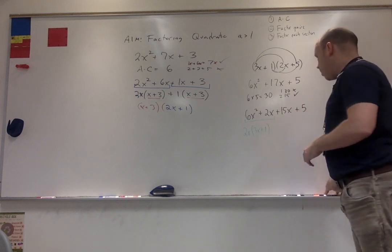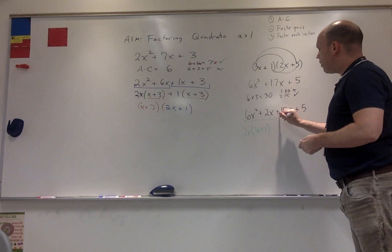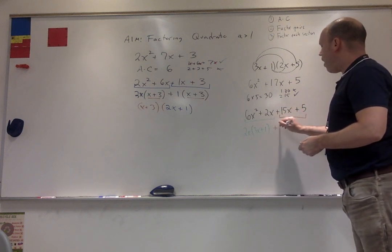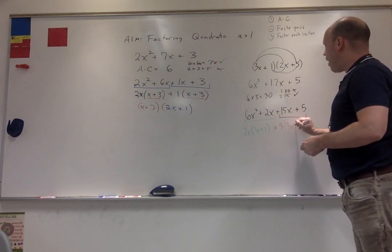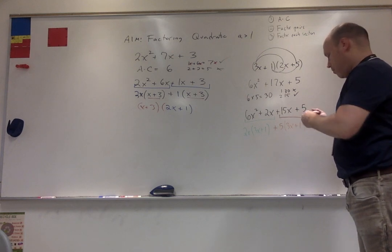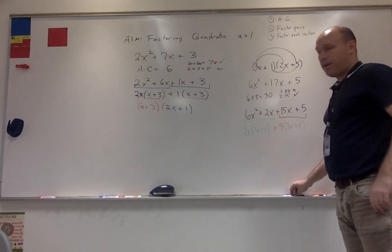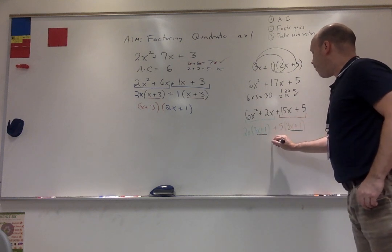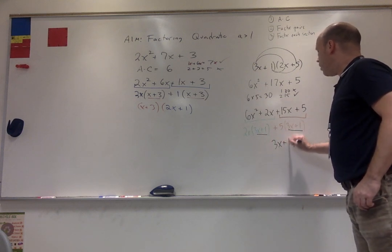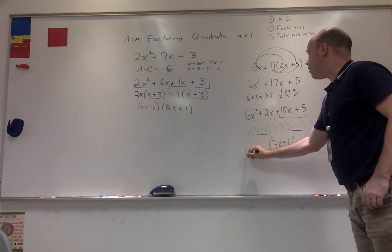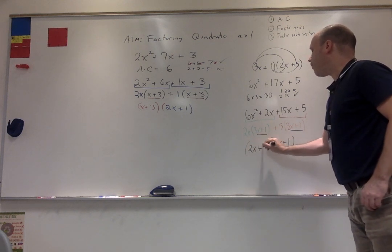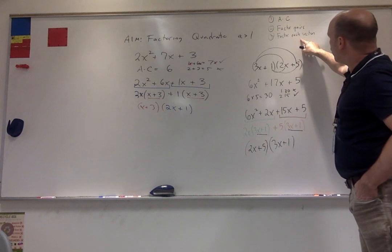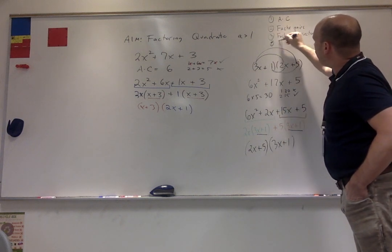Now let's look at my second section, plus 5 times 3x plus 1. Last, factor out the common term. So I have 3x plus 1. What does that leave me with? 2x plus 5. Factor each section, and then factor again.